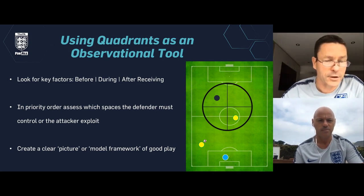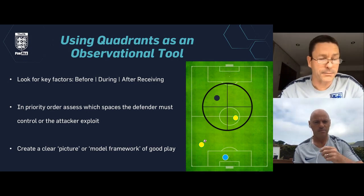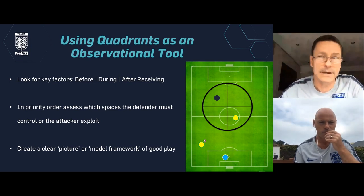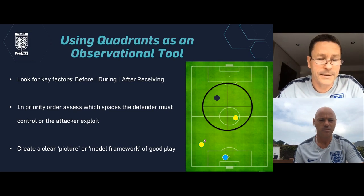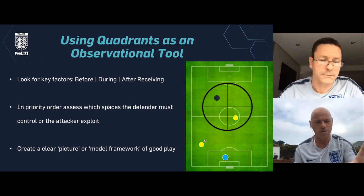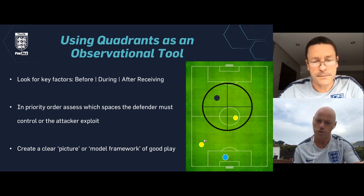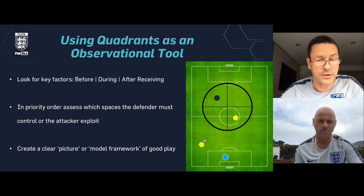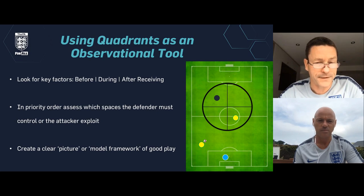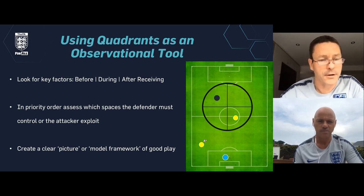We're looking at the spaces the defender must control and the attacker must exploit. We get clear pictures or model frameworks of good play — regular pictures like someone dropping off, a vertical run behind, a blind side run, a run across. This can be used both in and out of possession. You can look at whether the defender is in the right position, close enough, ball side or goal side, and then assess individual strengths and weaknesses — is the striker really quick? Does the defender have more time on the ball?